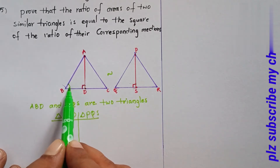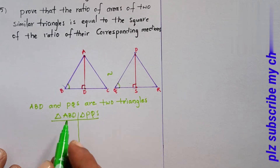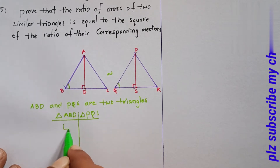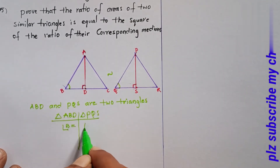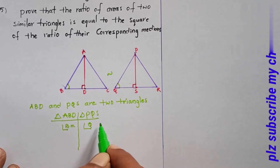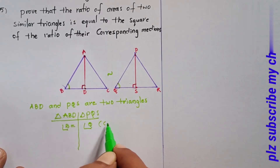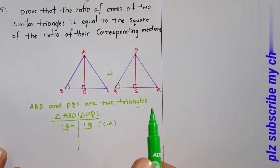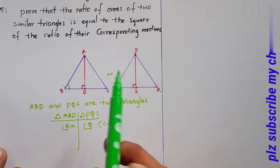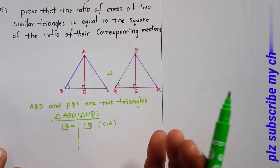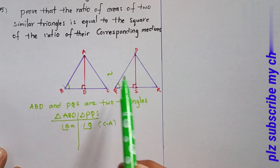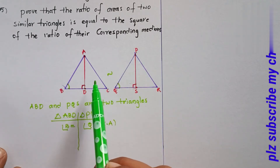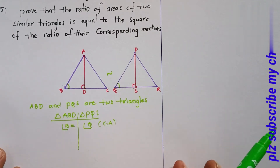Angle B equals angle Q. These are corresponding angles. Triangles ABC and PQR have the same corresponding angles — angle A, B, C correspond to angle P, Q, R.